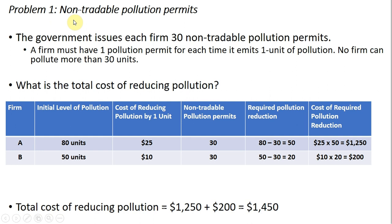We're going to start with non-tradable pollution permits. In this case, the firms cannot sell the pollution permits between themselves. The government issues each firm 30 non-tradable pollution permits — a firm must have one pollution permit for each unit of pollution it emits. No firm can pollute more than 30 units. What is the total cost of reducing pollution under this scenario?